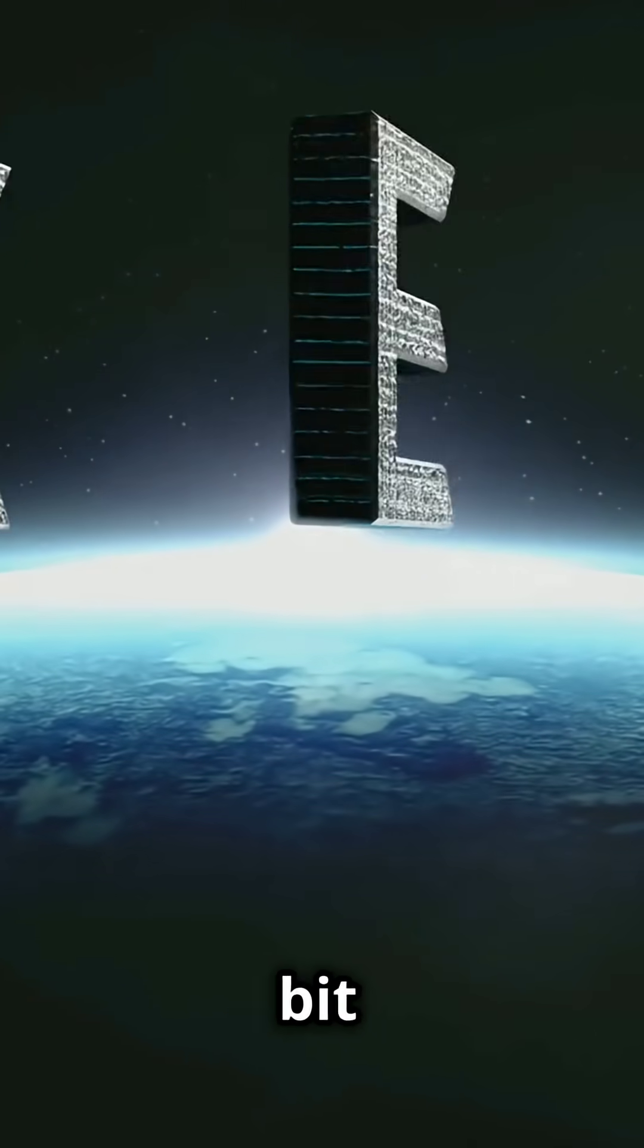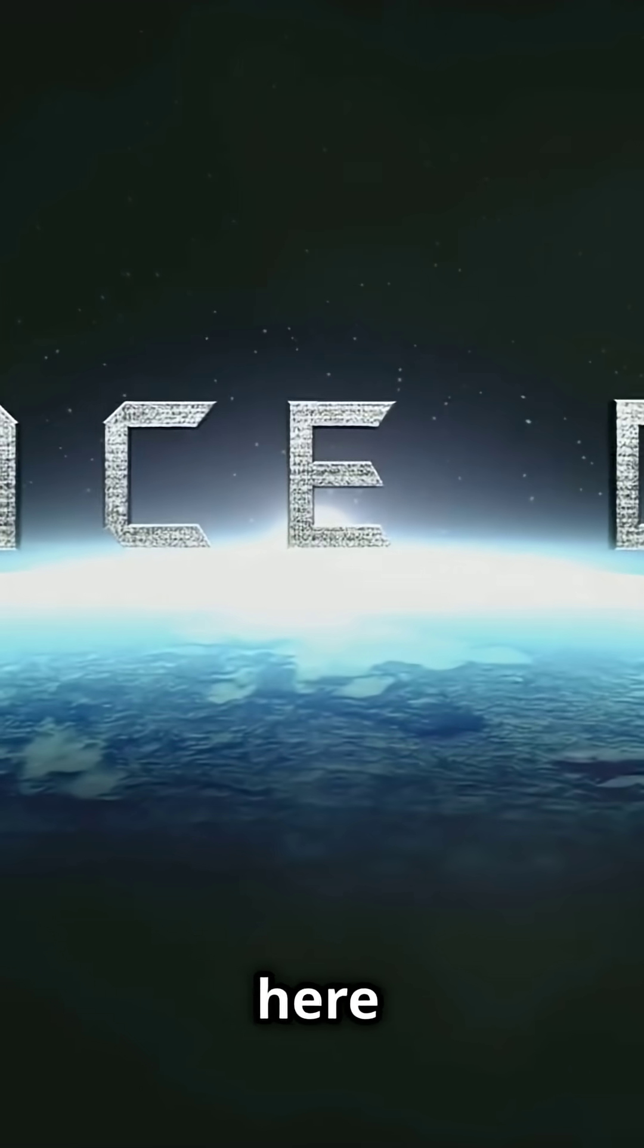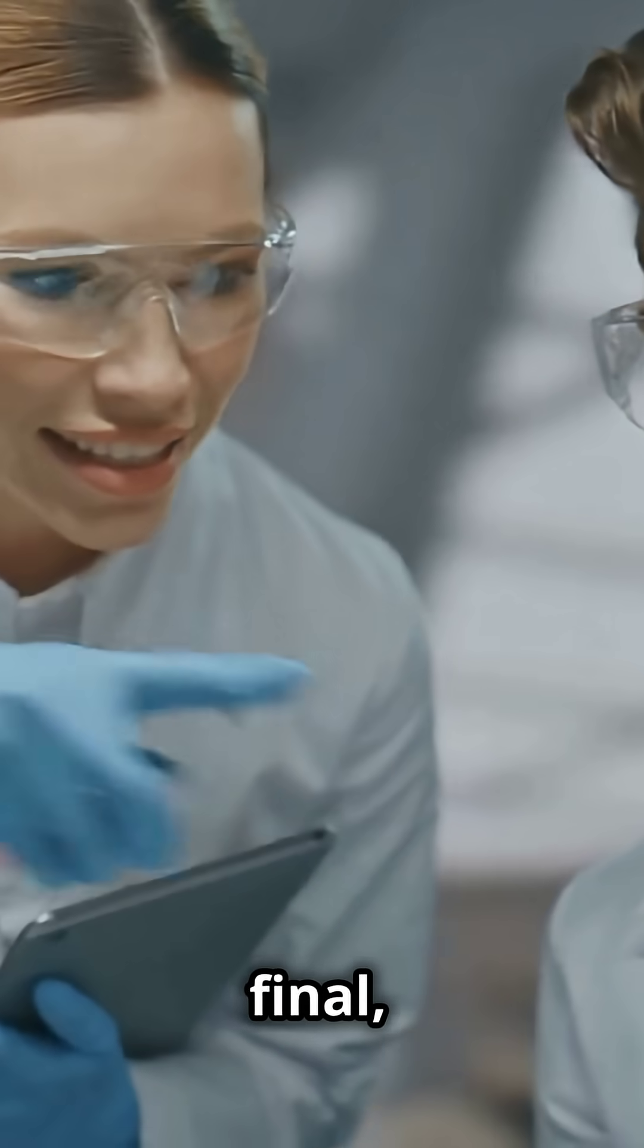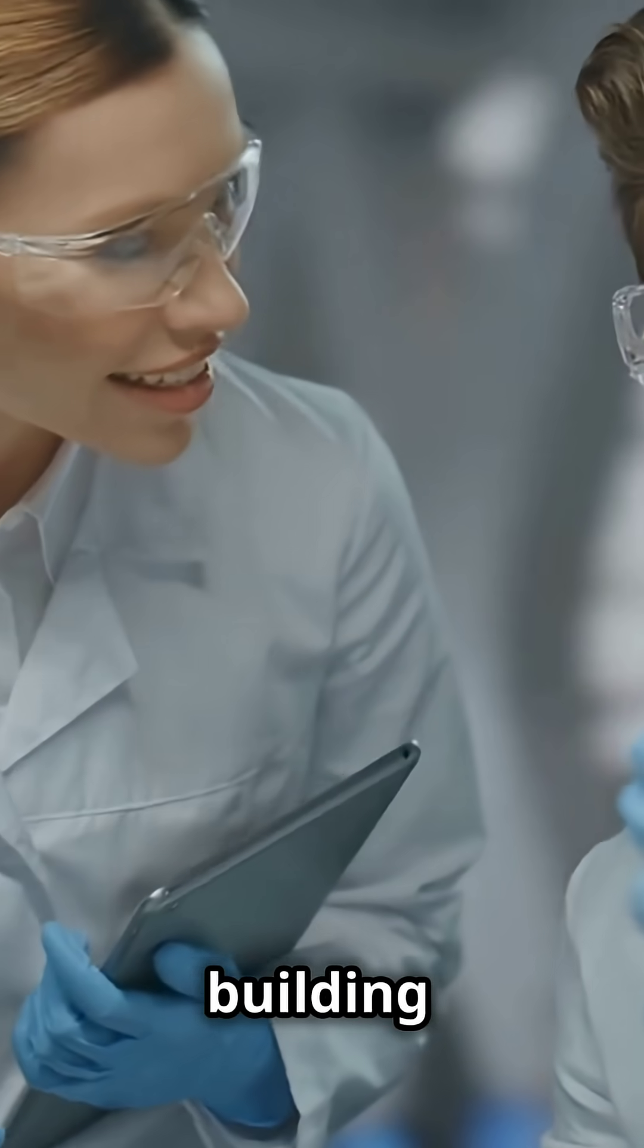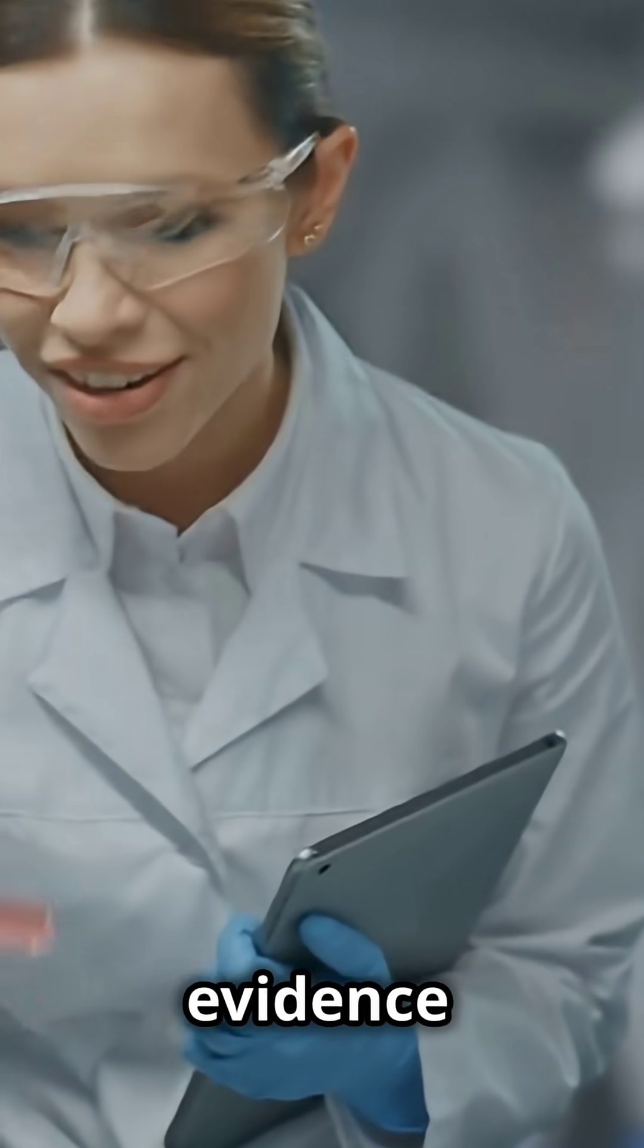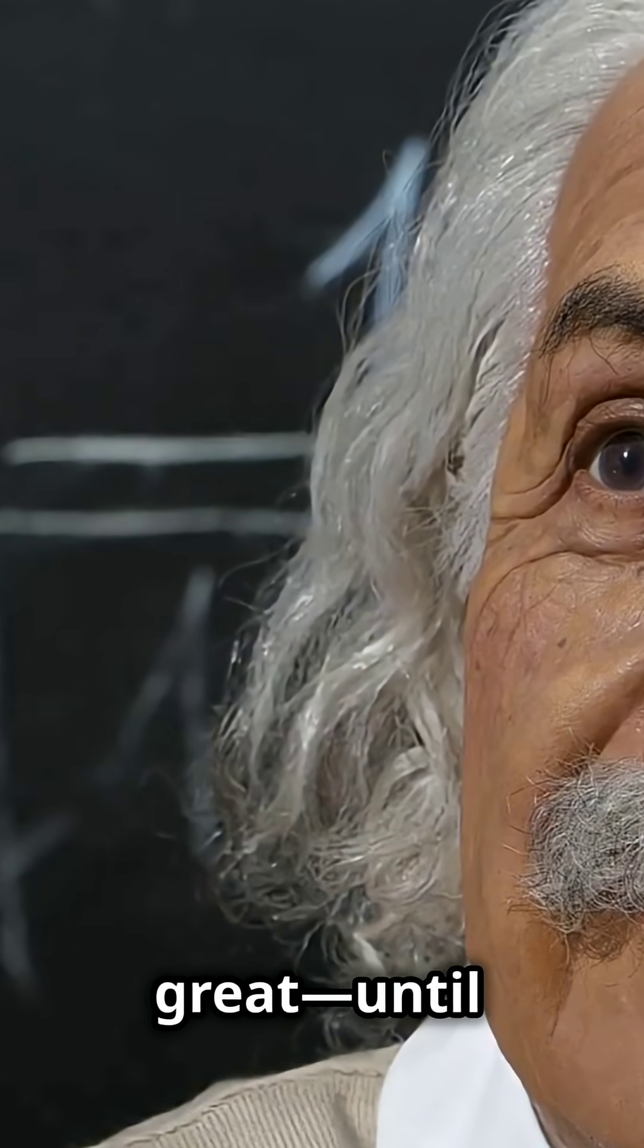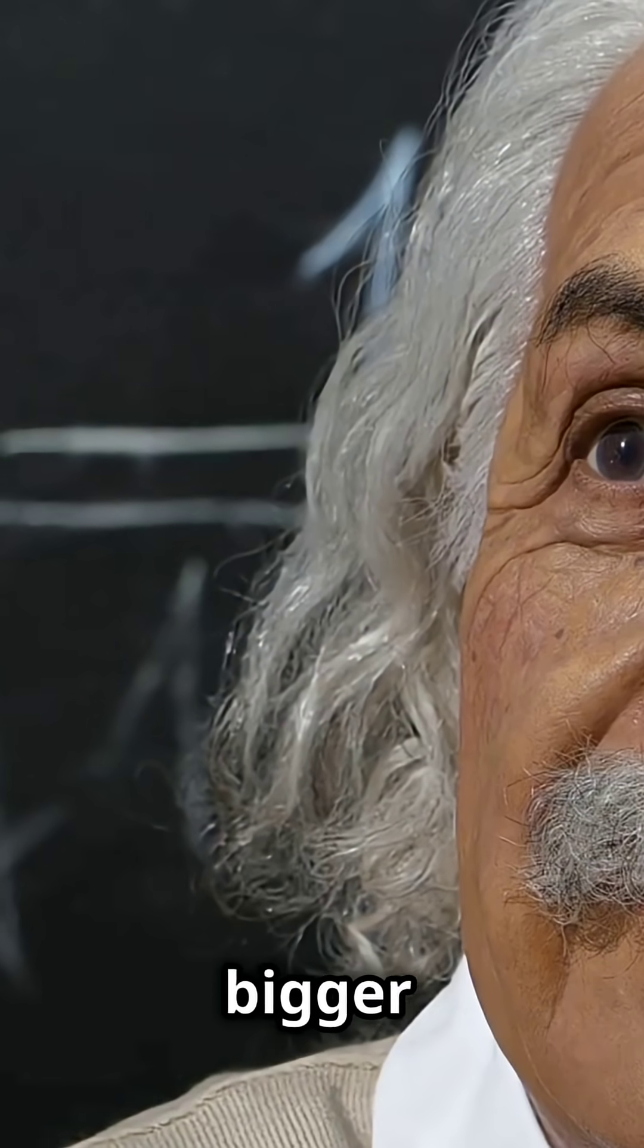So up to now, every bit of evidence says the rules we discover here seem to work across the cosmos. But here's the thing: science isn't about claiming final, unchanging truths. It's about building the best explanations with the evidence we have. Newton's ideas about motion and gravity worked great, until Einstein showed us what happens at higher speeds and bigger masses.